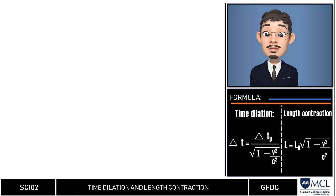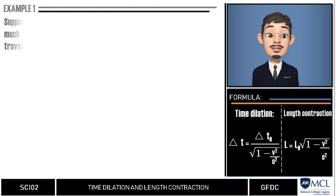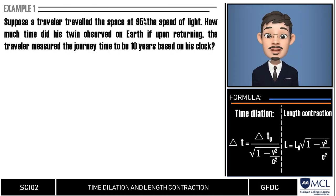Let us have example number one. Suppose a traveler traveled the space at 95% of the speed of light. How much time did his twin observe on Earth if upon returning, the traveler measured the journey time to be 10 years based on his clock?